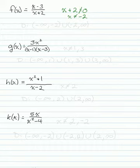That would be one way we could write our domain. In interval notation, we would have negative infinity to negative 2, negative 2 to infinity, and we'll union those together. And there's our domain for f.